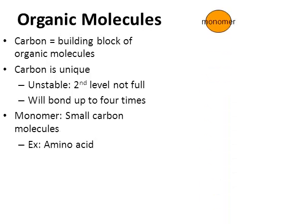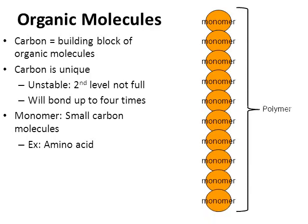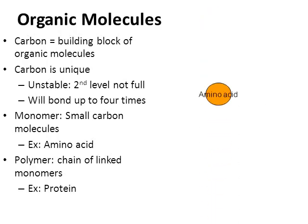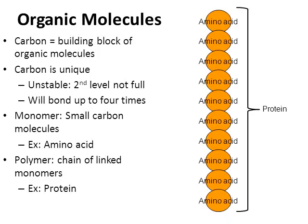Molecules can be big and small. A small carbon molecule is called a monomer. For example, amino acids are small organic molecules — they're monomers. When you link one monomer with another into a big chain, you get a polymer. Polymers are large, complex chains of monomers. A protein is an example of a polymer made from a large collection of smaller amino acids. The amino acids individually are the monomers; the overall protein is the polymer.